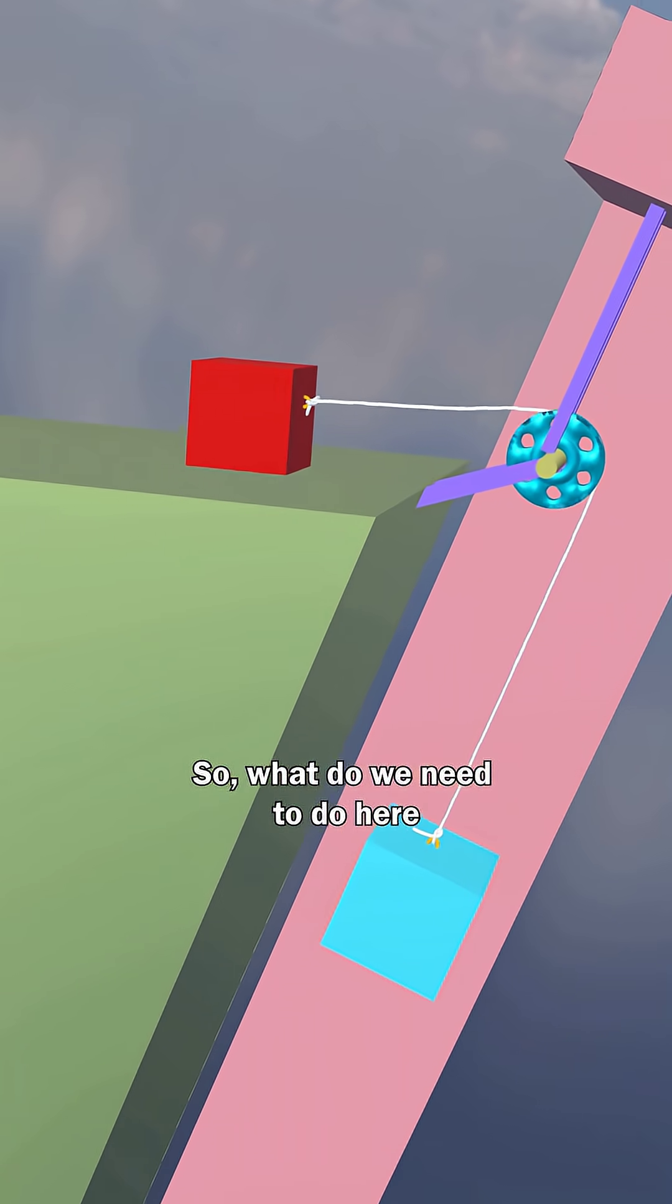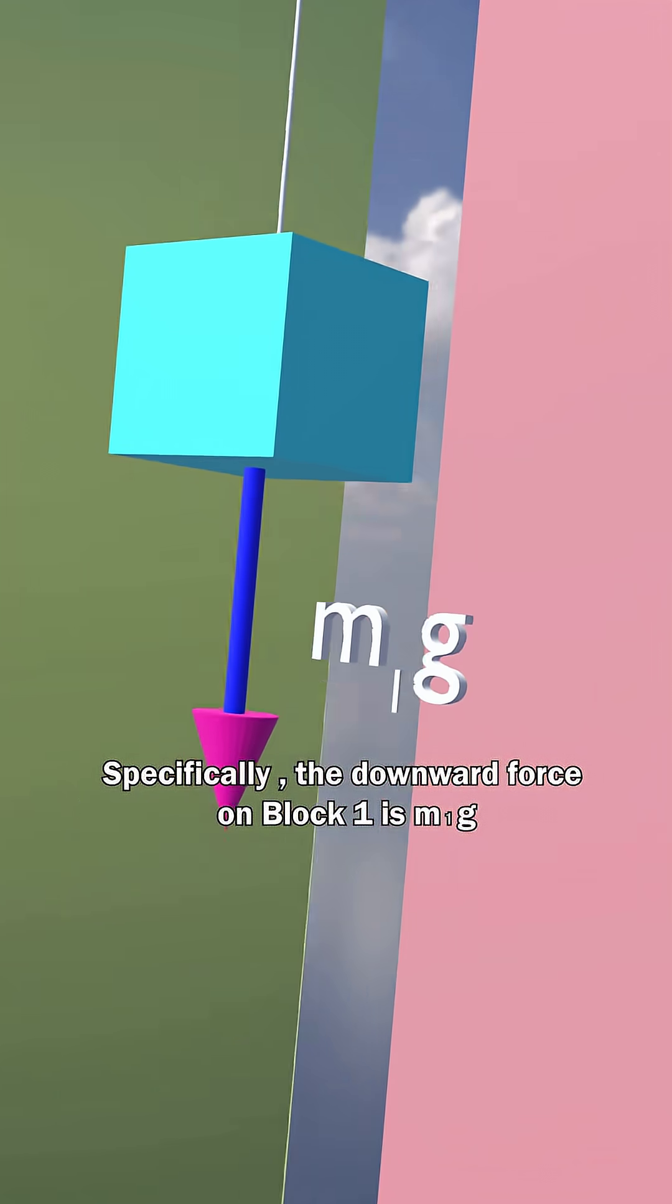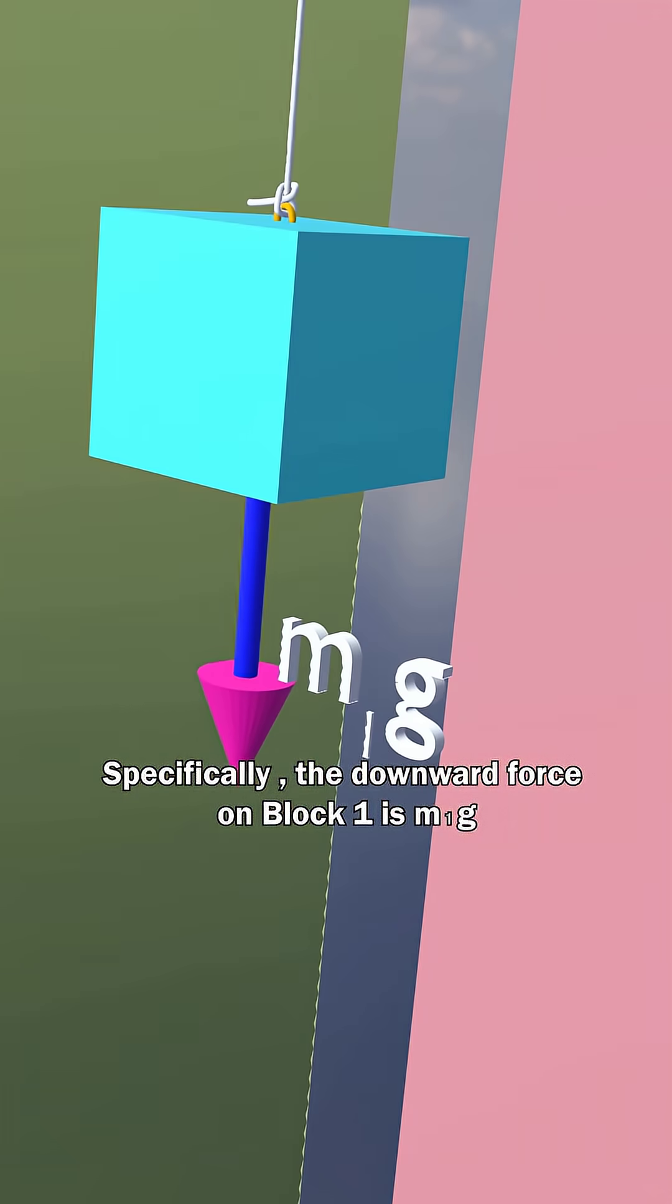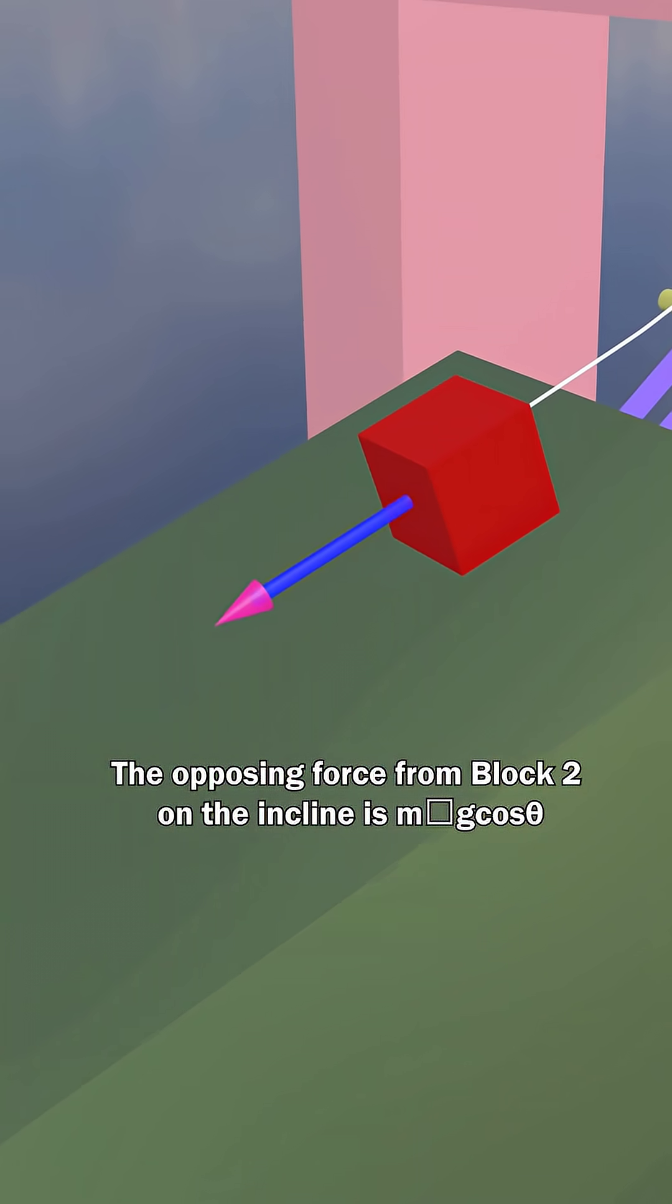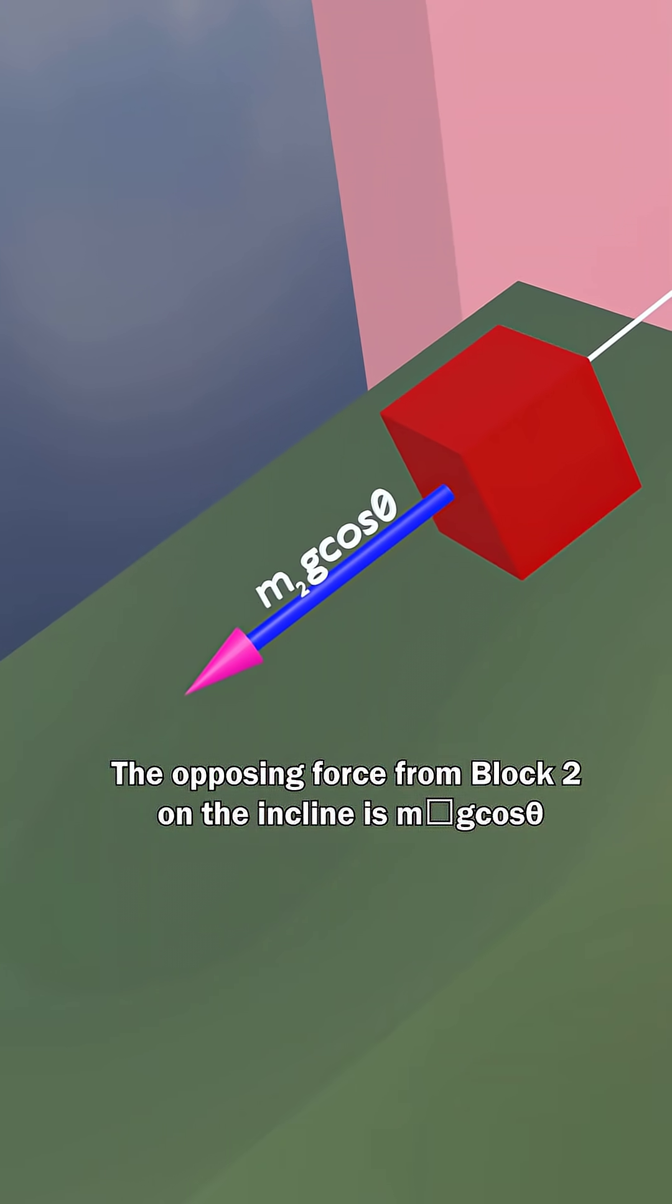We need to balance the forces acting on the system. Specifically, the downward force on block 1 is m1g, and the opposing force from block 2 on the incline is m2g cos theta.